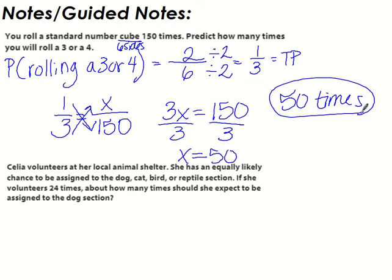Celia volunteers at her local animal shelter. She has an equally likely chance to be assigned the dog, cat, bird, or reptile section. If she volunteers 24 times, about how many times should she expect to be assigned to the dog section?